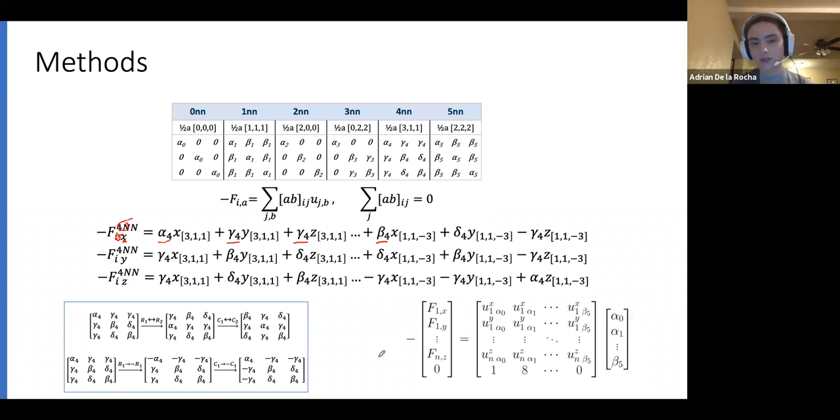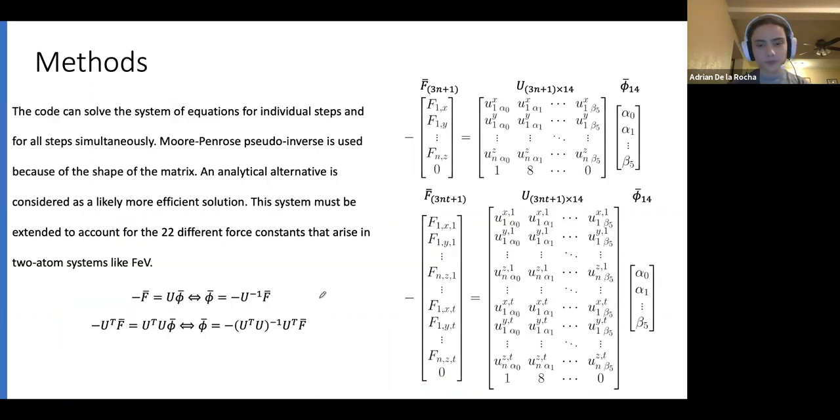From here, it's easy to abstract that the total force acting on atom i in direction x, y, or z can be described as a linear sum of all our different values of force constants. In this case, we have 14 for simple BCC. This gives us a system of equations as a matrix product shown in the lower corner. The second thing to consider is the translation constraint, which says that all elements sharing a position ab over the different atoms j must add up to zero. Because of the symmetry, this ends up being just one equation, shown as the last row of the matrix product.